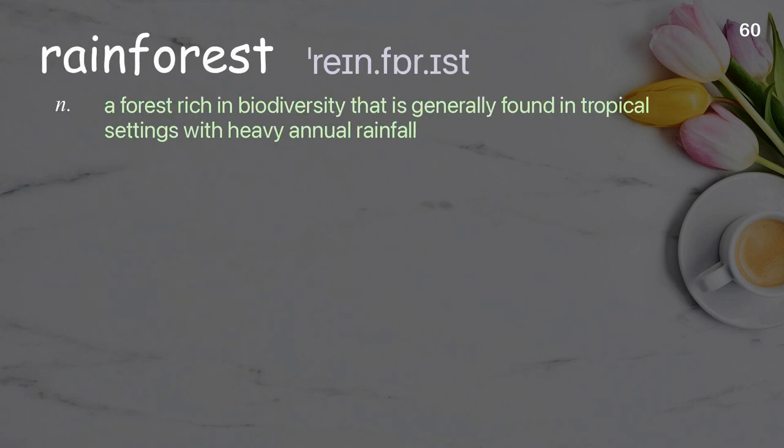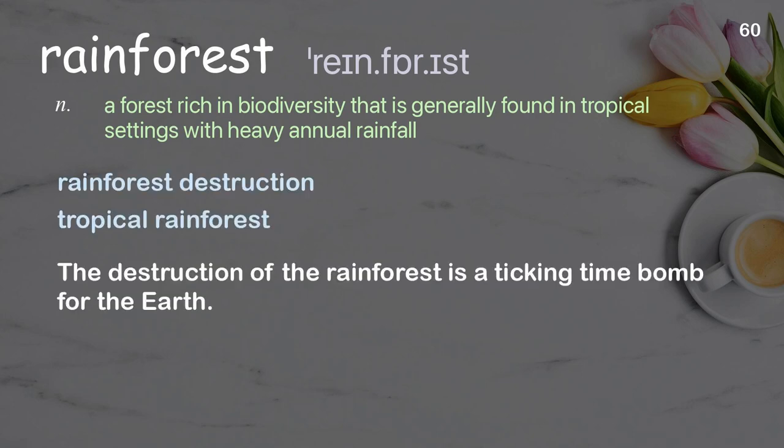Rainforest: a forest rich in biodiversity that is generally found in tropical settings with heavy annual rainfall. Examples: rainforest destruction, tropical rainforest. The destruction of the rainforest is a ticking time bomb for the earth.